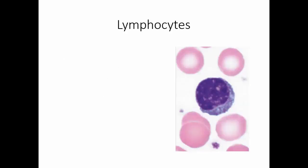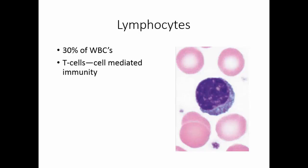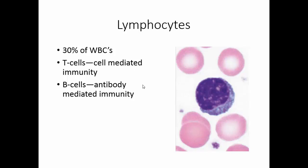Lymphocytes are agranulocytes making up about 30% of white blood cells. There are two types: T-cells, involved in cell-mediated immunity, and B-cells, involved in antibody-mediated immunity. These are active in viral and fungal infections. Since viral infections are much more common than fungal infections, a leukocytosis with an increase in lymphocytes tends to suggest a viral infection.